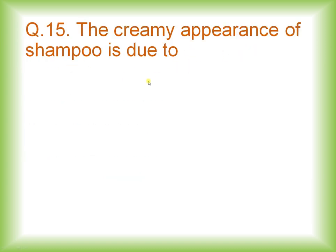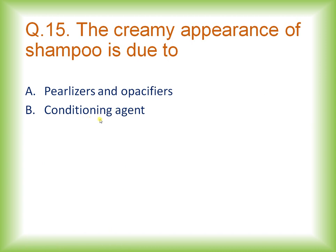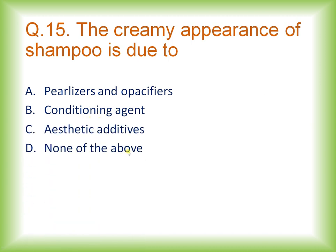Question fifteen: the creamy appearance of shampoo is due to — pearlizers and opacifiers, conditioner agents, aesthetic additives, or none of the above? The correct answer is pearlizers and opacifiers, which are mainly responsible for giving the creamy appearance to shampoo.